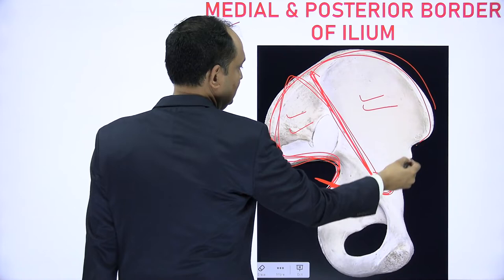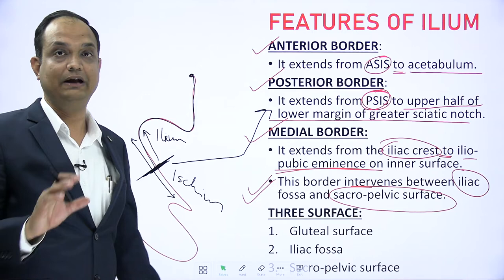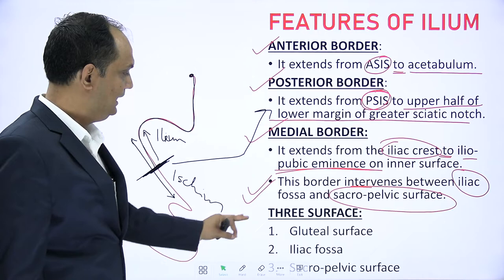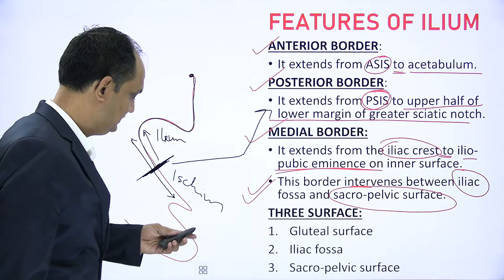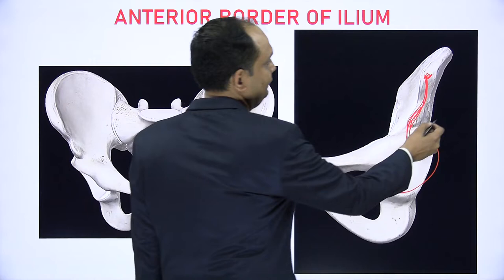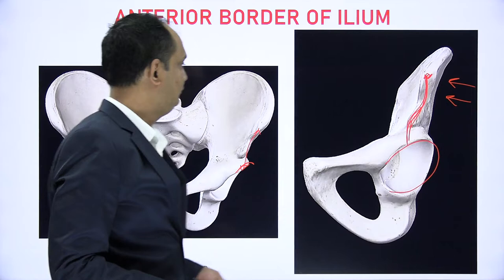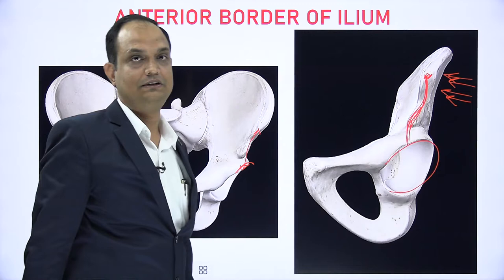The three borders are anterior border, posterior border, and medial border. The three surfaces are gluteal surface, iliac fossa, and sacro-pelvic surface. The gluteal surface is facing outside because these areas are known as gluteal regions or buttocks. On the outer side, this surface is known as the gluteal surface. On the medial side, in the anatomical placement of the bone, this is known as the iliac fossa.